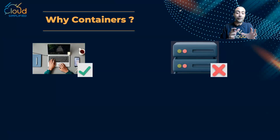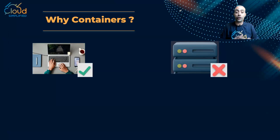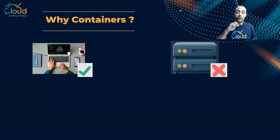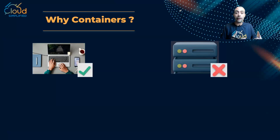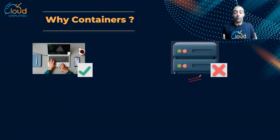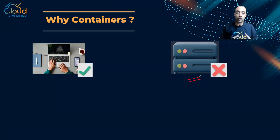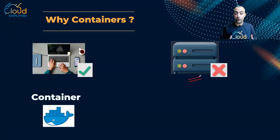Why were the same lines of code working in the testing environment but not in production? The answer is simple: for my code to work, I import libraries and use functions inside them. If I didn't import the same libraries in production, my application won't work. So the solution is importing the same libraries in production — and that's exactly the problem containers have solved.